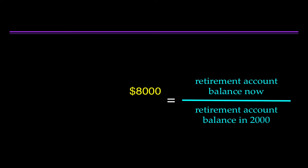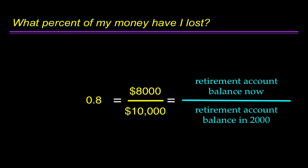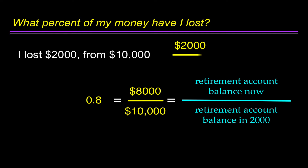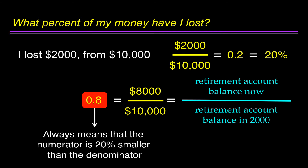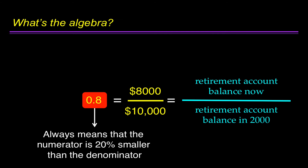Let's say I have $8,000 in my retirement account now, and it was $10,000. That produces a ratio of 0.8. What percent of my money have I lost? I lost $2,000 from $10,000, so that's 2,000 over 10,000 equals 0.2, or 20%. But that information is contained in the ratio of 0.8. A ratio of 0.8 always means the numerator is 20% smaller than the denominator. The algebra: 1 minus 0.8 equals 0.2, which equals 20%.